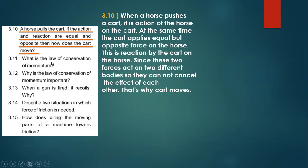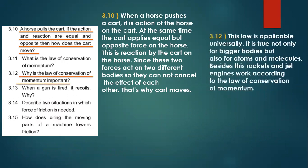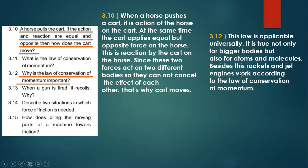Question 3.11 — what is the law of conservation of momentum — we have discussed this. Question 3.12 — why is the law of conservation of momentum important? This law is applicable universally; it applies to all objects in the universe. It is true not only for bigger bodies like stars but also for smaller objects like atoms and molecules. Besides this, rockets and jet engines work according to the law of conservation of momentum.